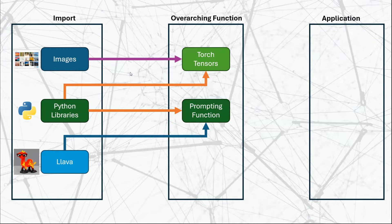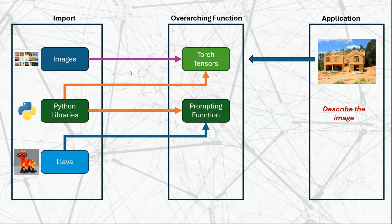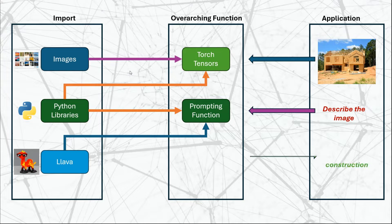The direct application of the system is that we're going to give the system an image. The image is going to be converted into PyTorch tensors using the overarching function. We're going to provide a query or prompt to describe that image, the prompt is going to be converted using the prompting function, and the end result is going to be an answer such as 'this is a house under construction.'